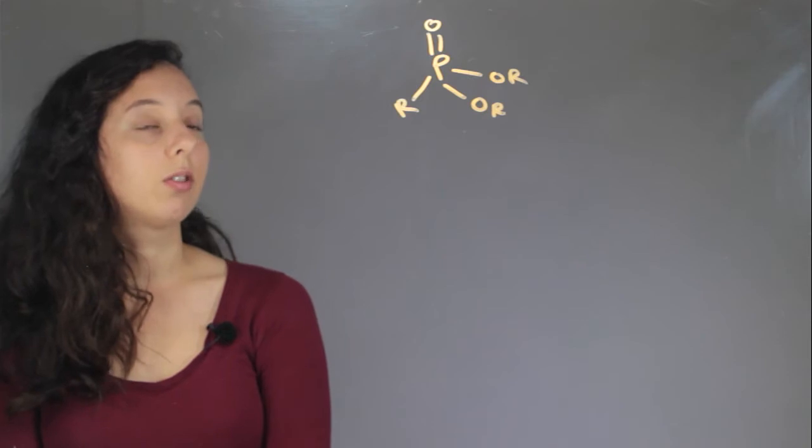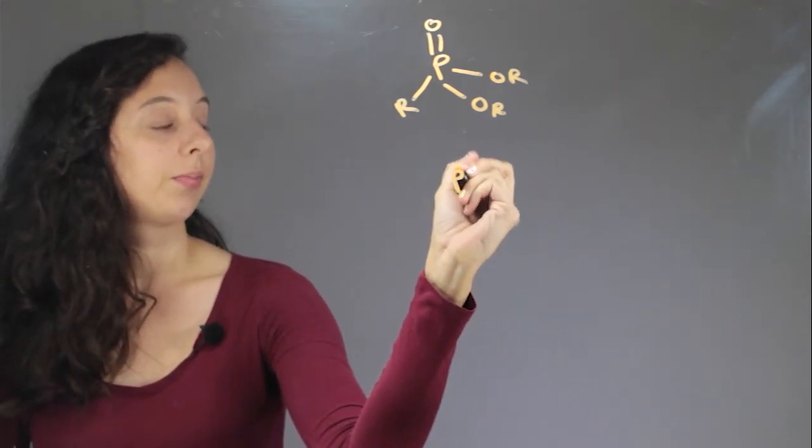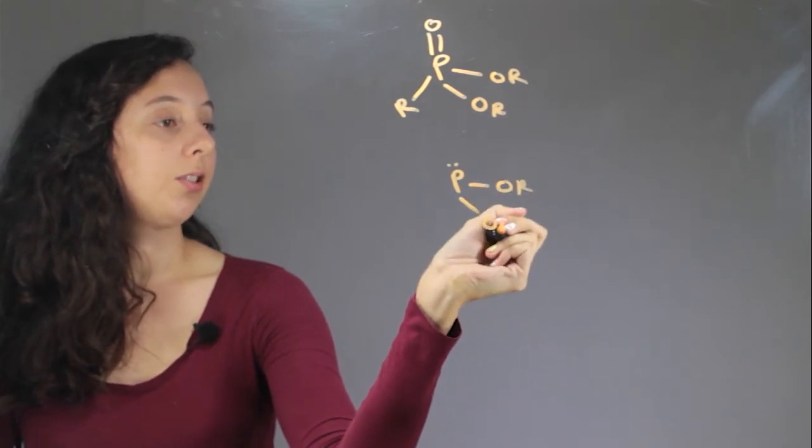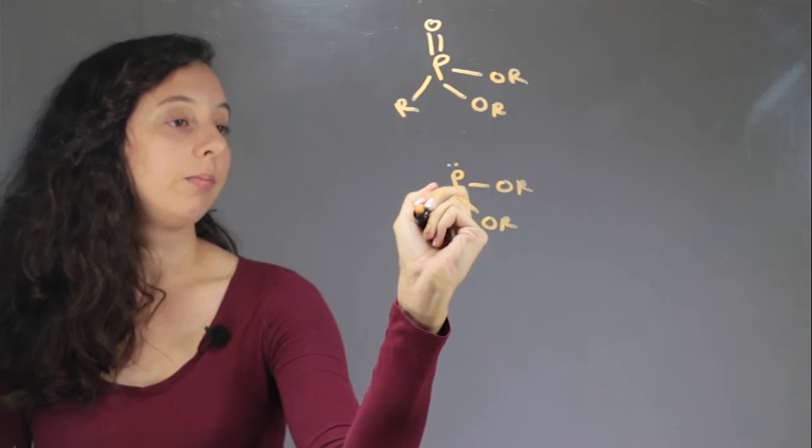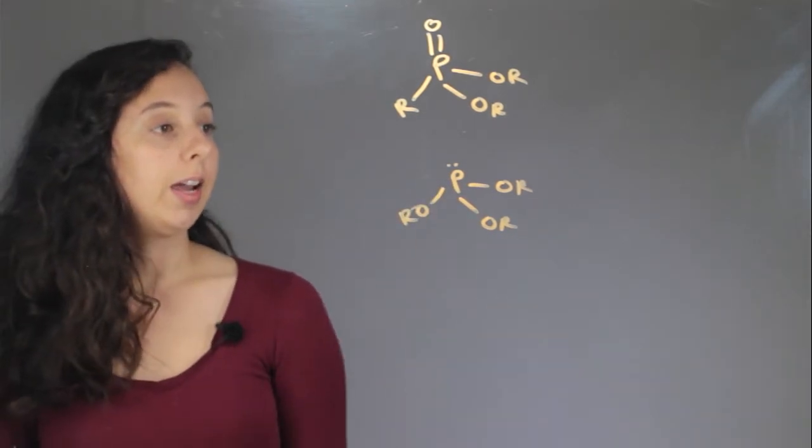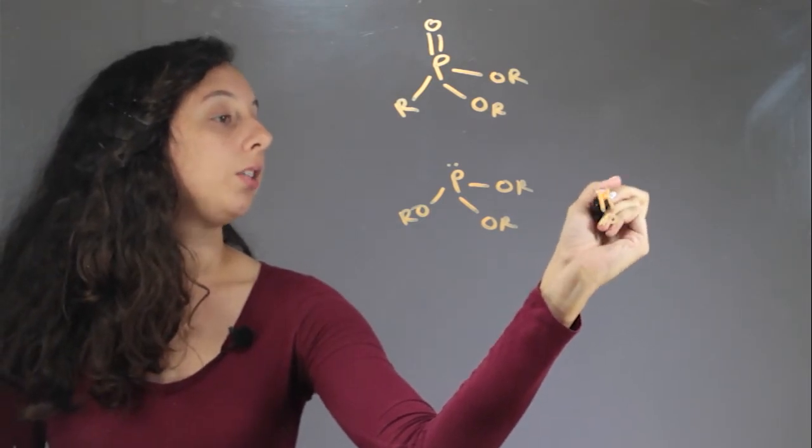Okay, so the way that we synthesize these is usually by taking this guy, and this is a trialkyl phosphite. So notice we have all OR groups at this point and we react it with an alkyl halide, and it's really common to use esters.